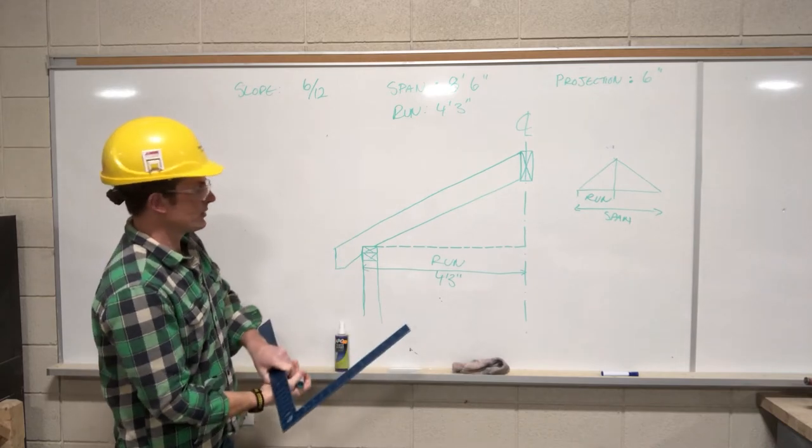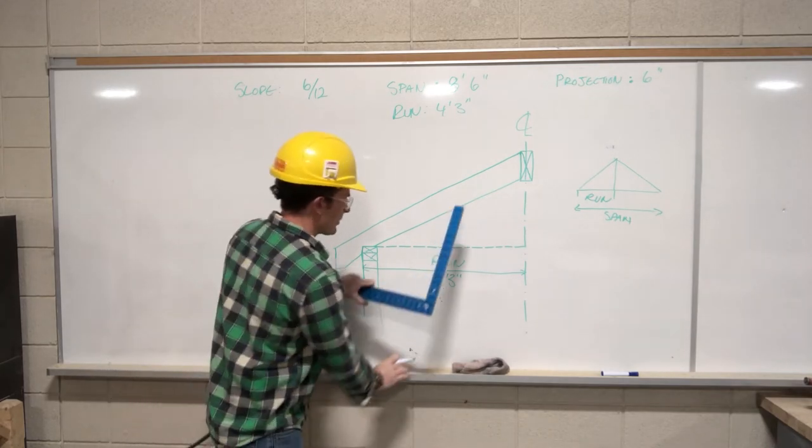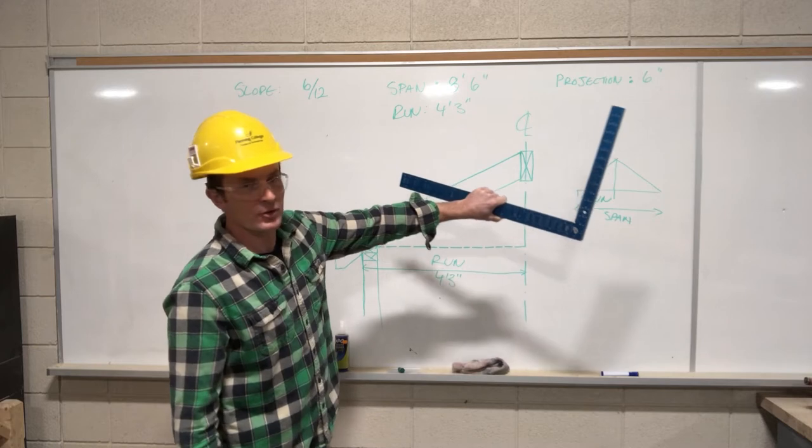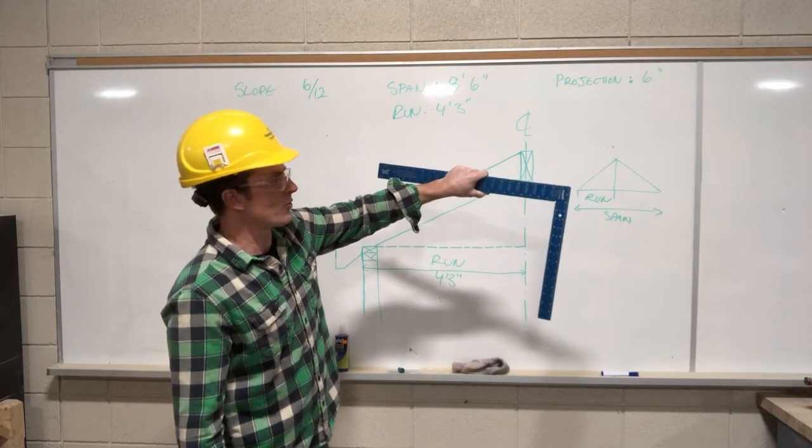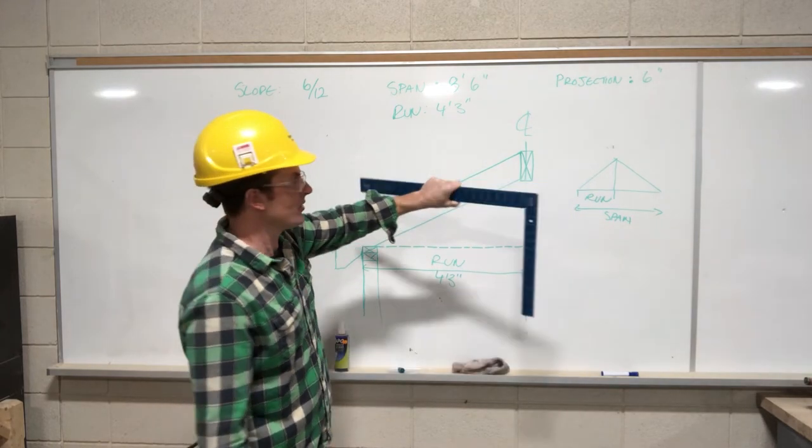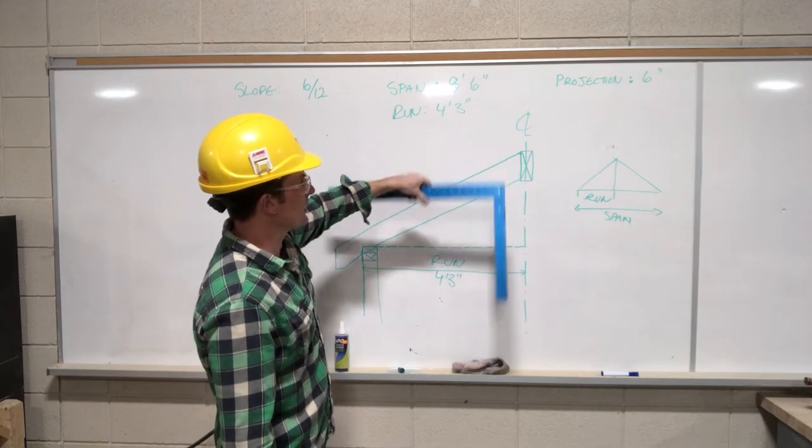So when I grab my rafter table, or my square, or my rafter square, and my left hand, long level left, I'm going to be laying out like this.